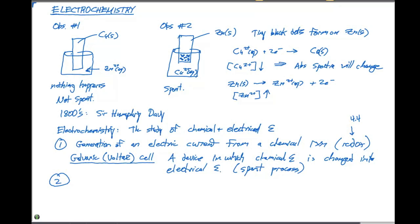The second type of a process that we can analyze in electrochemistry is the use of an electric current to produce a chemical change. The cell that we construct in this particular process is called an electrolytic cell.